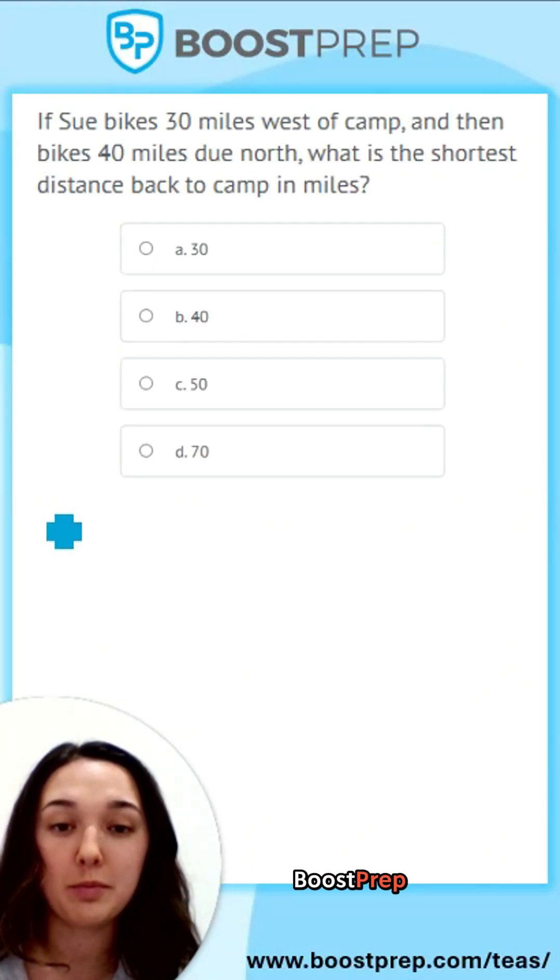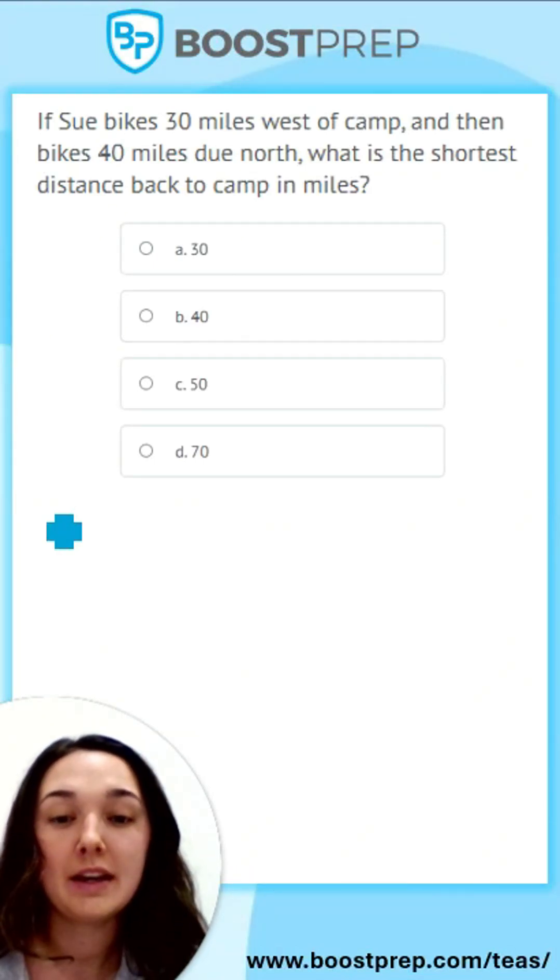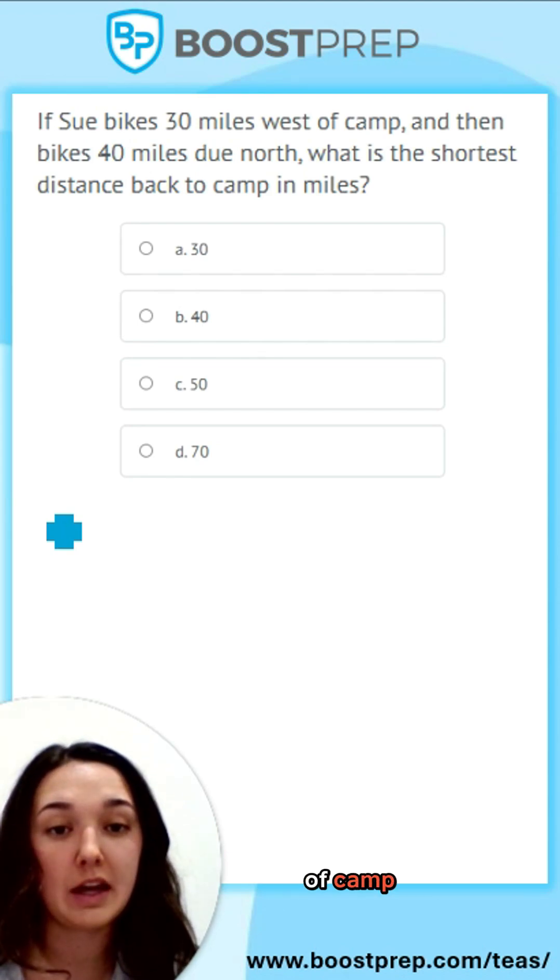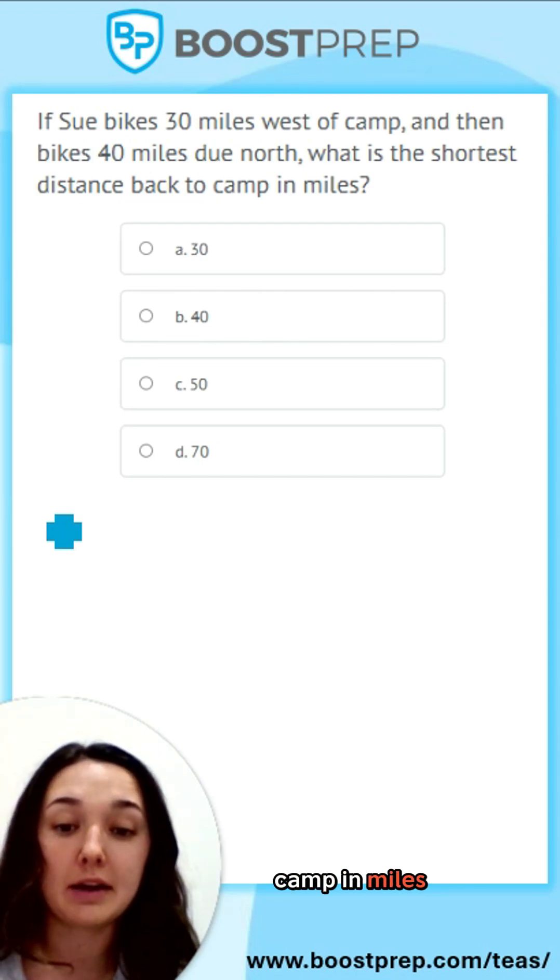Hi, this is Nurse Claire from Booze Prep with another Tease Math Problem. If Sue bikes 30 miles west of camp and then bikes 40 miles due north, what is the shortest distance back to camp in miles?